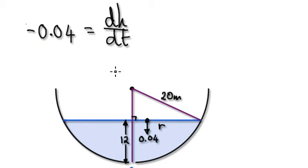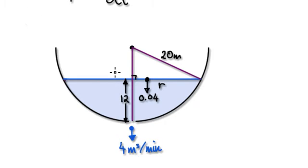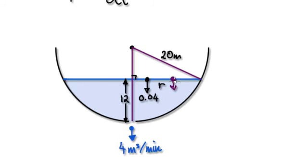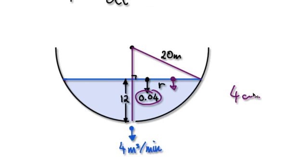So our overall answer means that at the precise moment in time when the water level is at 12 meters, the rate — the speed, if you like — at which the water level is changing is decreasing by roughly 4 centimetres per minute.